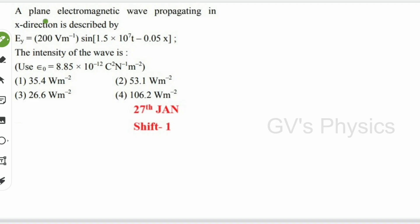The first question: a plane electromagnetic wave propagating in the x direction is described by the electric field equation Ey = E₀ sin(ωt − kx). They have given the function as sine, and they are asking for the intensity of the wave.